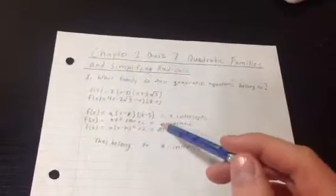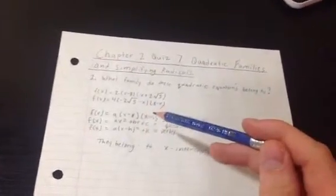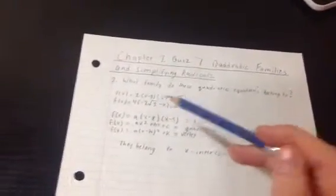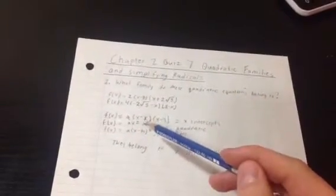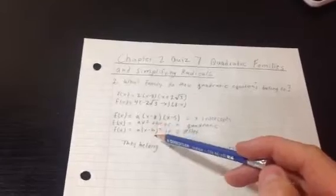I can already tell just by looking at these that both are part of the x-intercept family, just because there are no exponents in these equations. But in the other ones, vertex and quadratic, there is an exponent that is part of the equation.